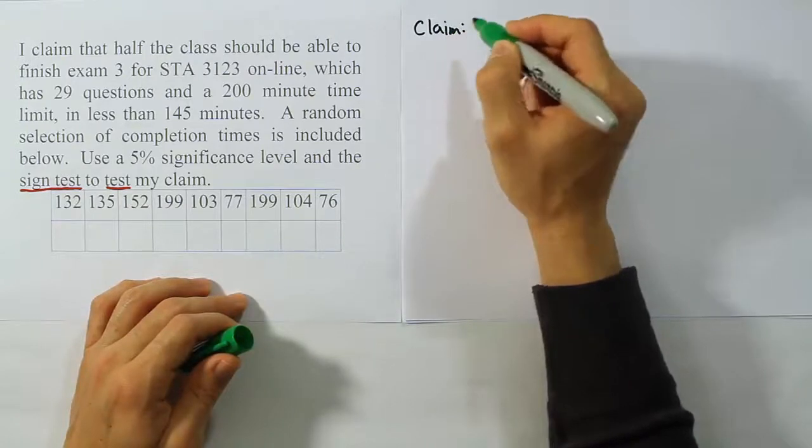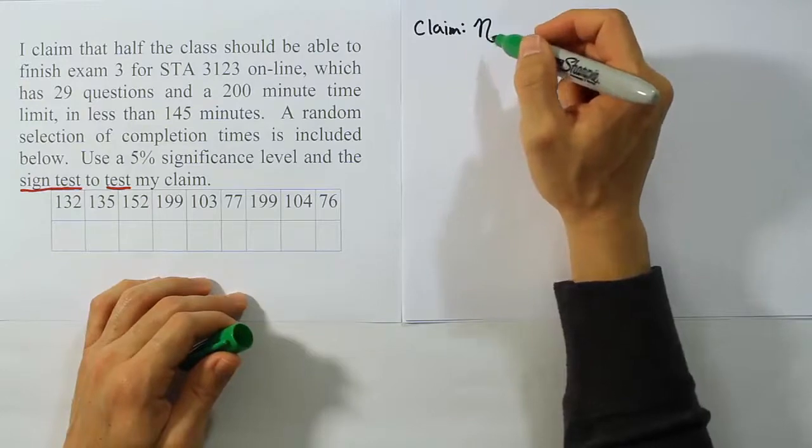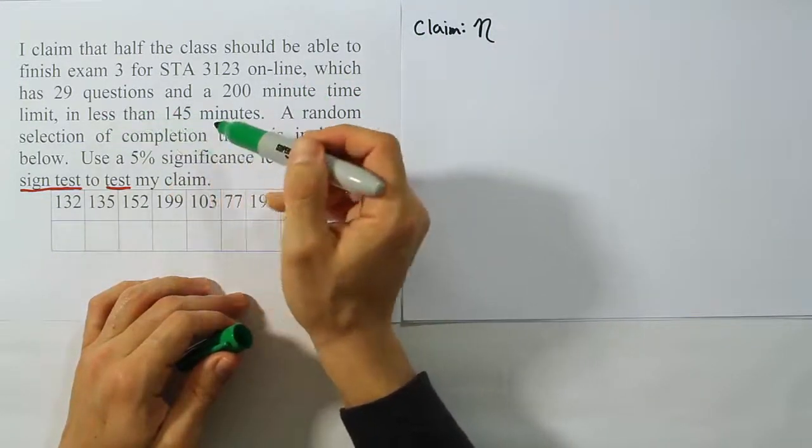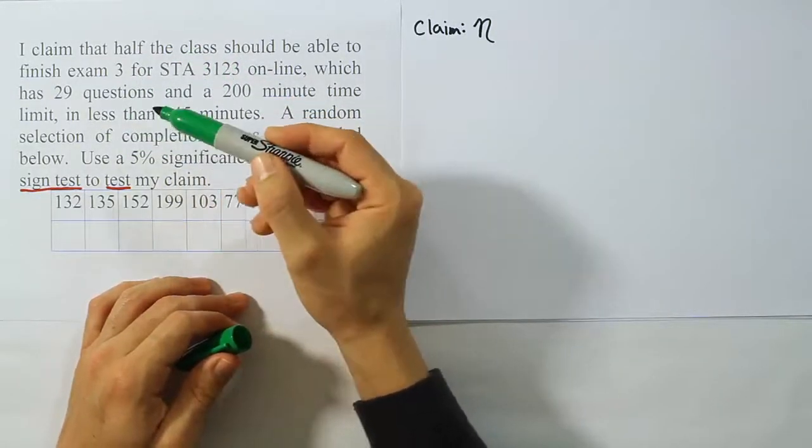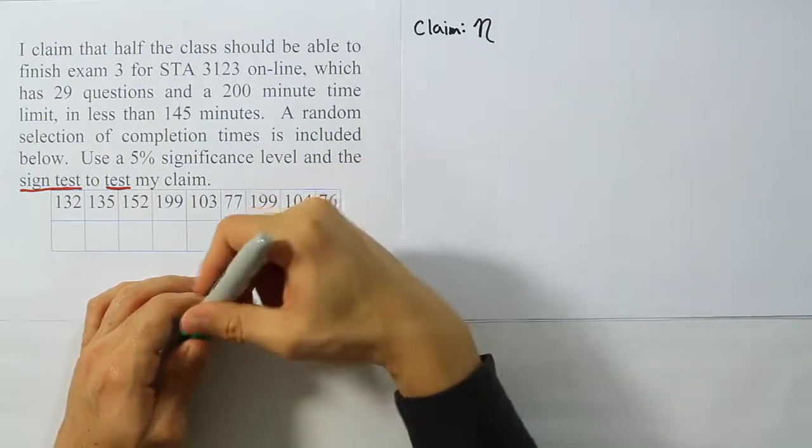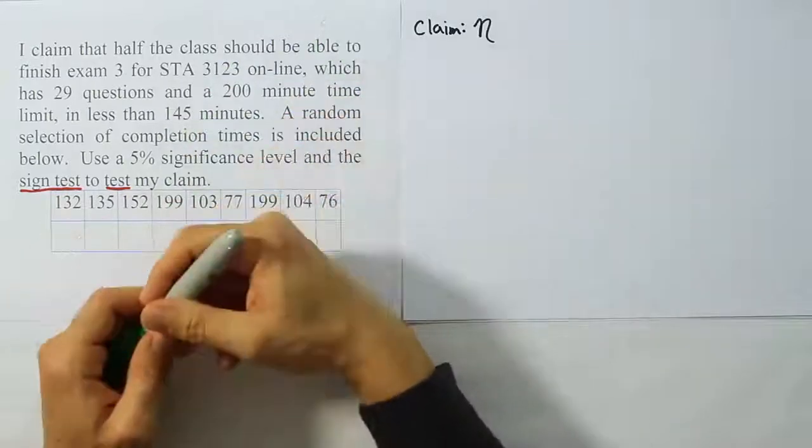Remember that the claim in the sign test uses the symbol eta, which is the population symbol for the median. And what is this problem saying? It's saying that they should be able to finish in less than 145 minutes, and I say that half the class should be able to finish. Well, half the class means that, of course, I'm saying the median here is equal to 145 minutes.